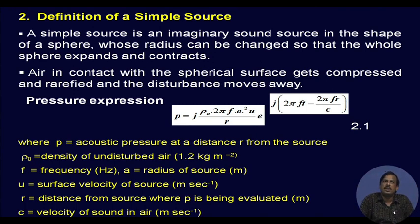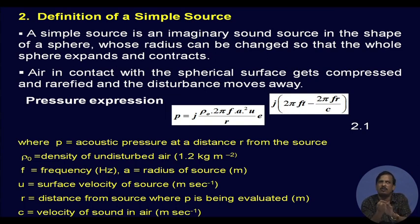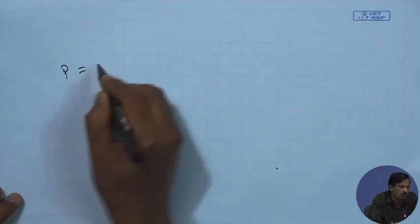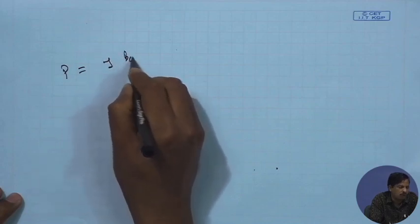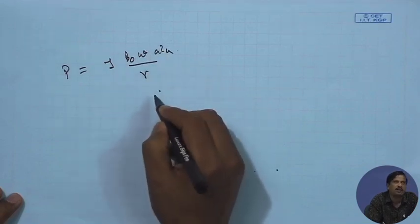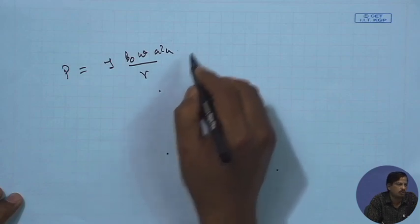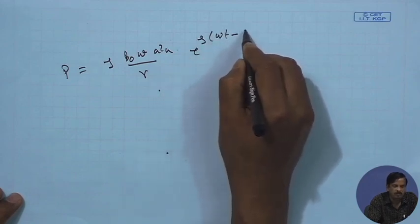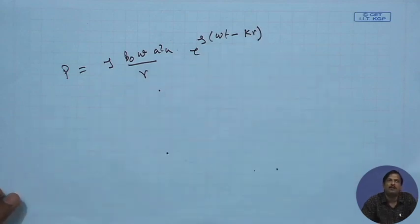If the sphere is changing in constriction and expansion, the surrounding air will also have constriction and expansion, and that way the sound energy will be distributed in the room. The expression for pressure from the sound source is: p = j·ρ₀·ω·a²·u / r · e^(j(ωt − kr)), where r is the distance from the source.